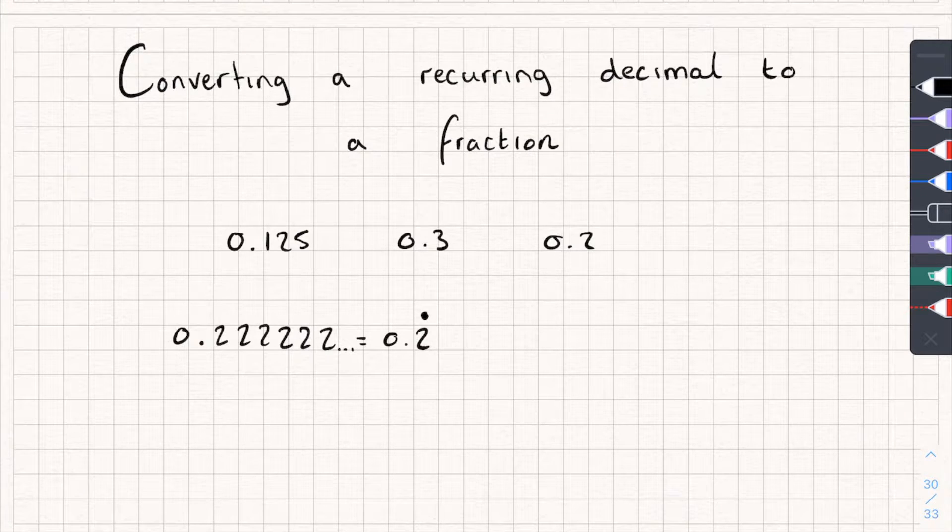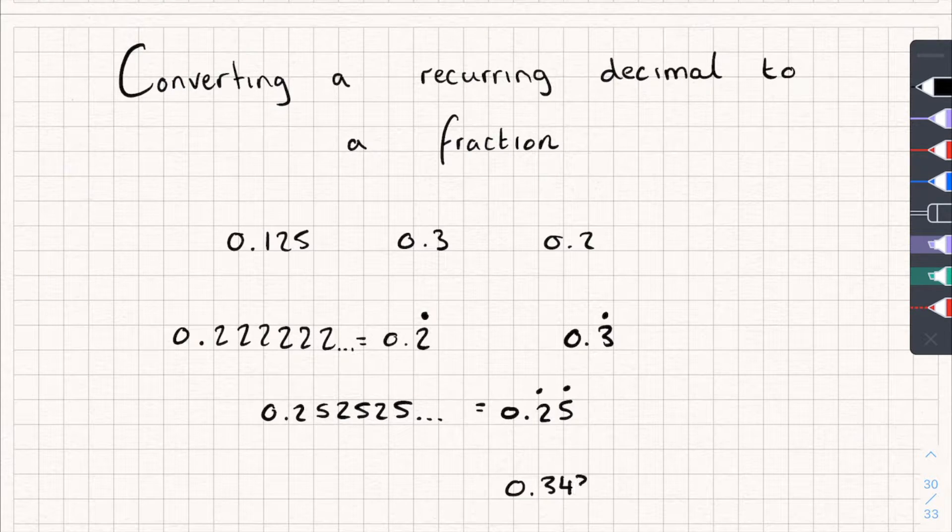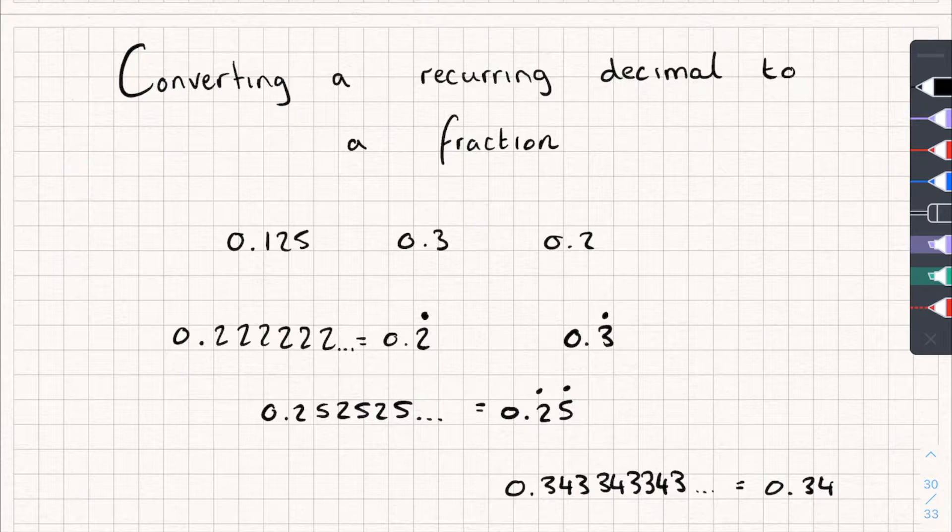It doesn't have to be 0.2. It could be 0.3 recurring. It might be 0.252525 and so on, and we represent that like this: 0.25 with a dot above the 2 and the 5. It might even be 0.343343343 and so on, and the way we'd represent that is 0.343 with a dot above each 3. Everything contained within those two recurring dots is what is repeating. So that's what a recurring decimal is. It's just a decimal that never ends.